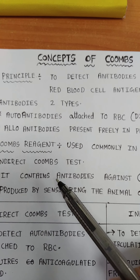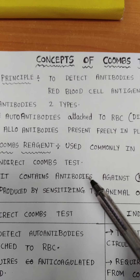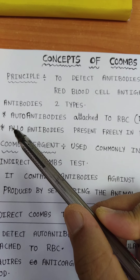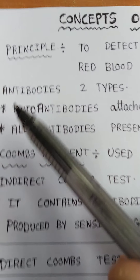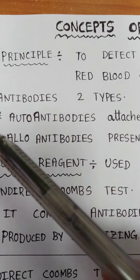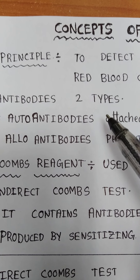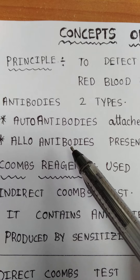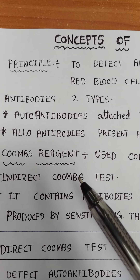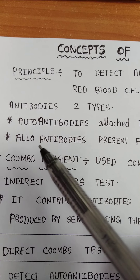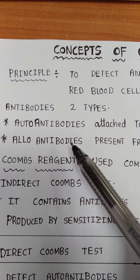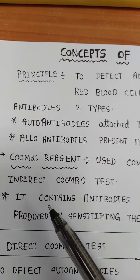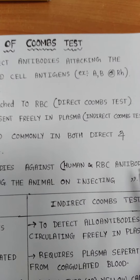The Coombs reagent contains antibodies against human RBC antibodies. We already discussed that there are two types of human RBC antibodies — autoantibodies and alloantibodies — which destroy and hemolyze red blood cells. The Coombs reagent contains antibodies against these human RBC antibodies, which will detect and act on them.